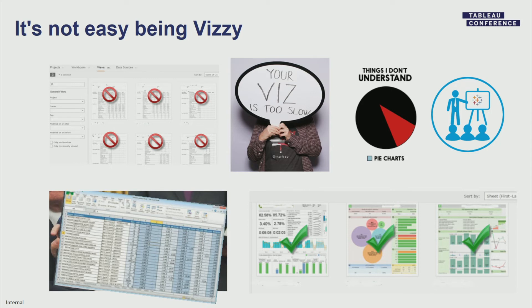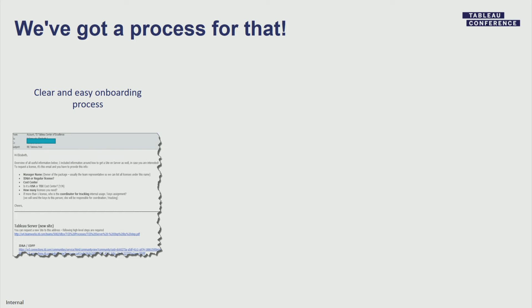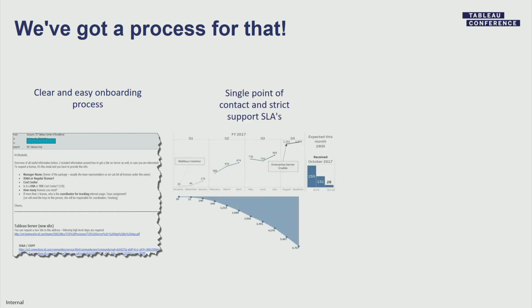Five people supporting 1,500 developers across around 70 teams - 50 on the server, 20 still in the queue. We have to be really, really good at process. Every single process - whether onboarding, troubleshooting, or monitoring - is documented with as much automation as possible. We centralized all support into a single mailbox. The goal is for everyone in every single line of business at TD to think: I have a Tableau problem, I send an email to the Tableau CoE.